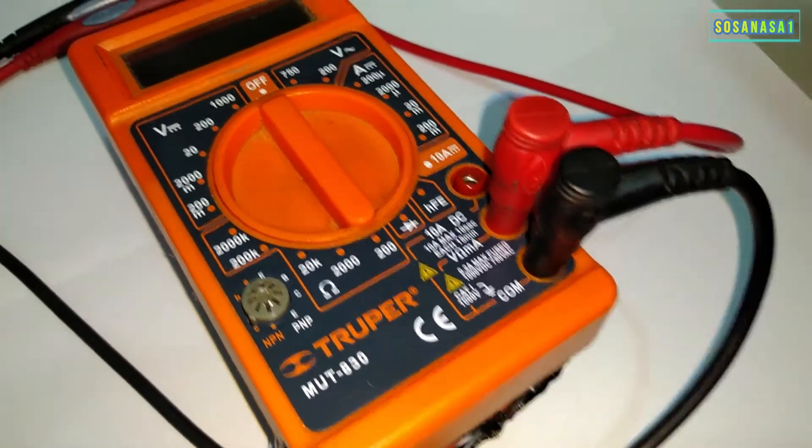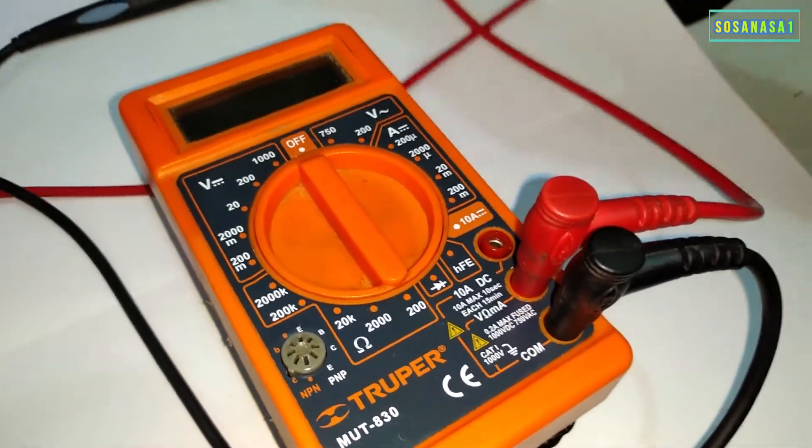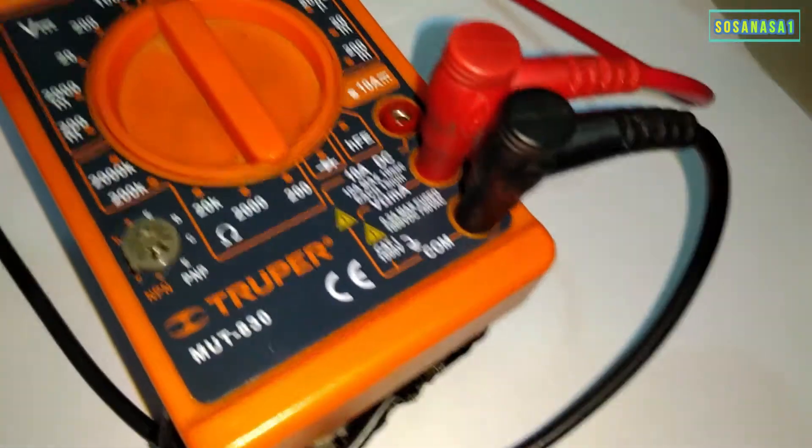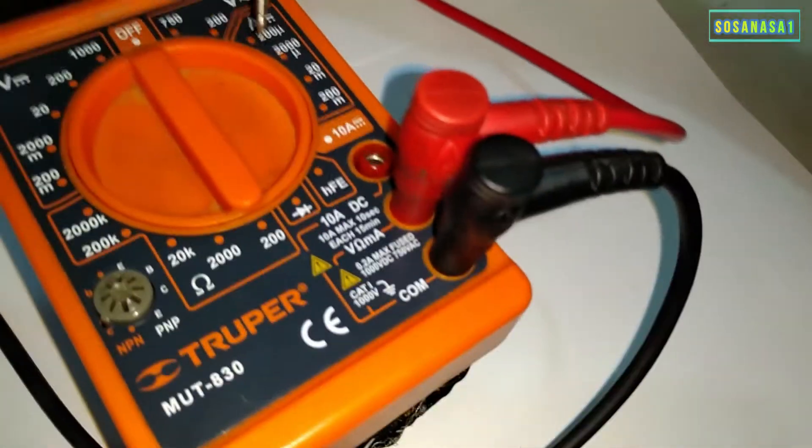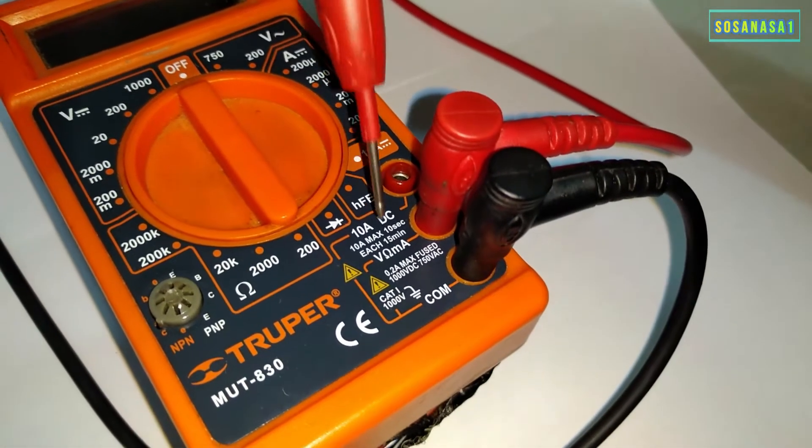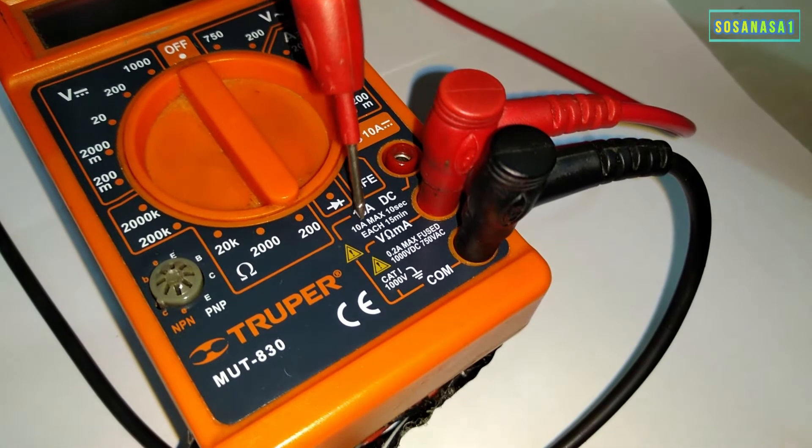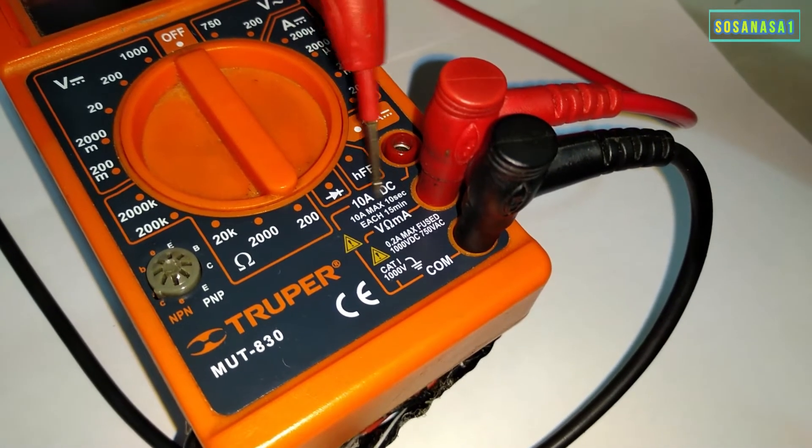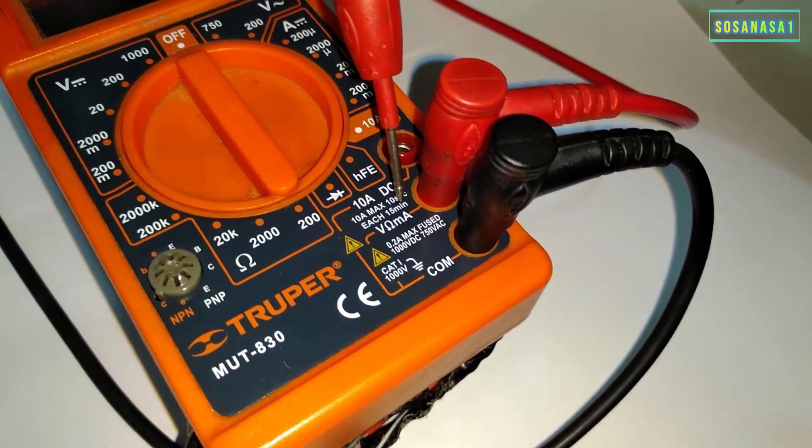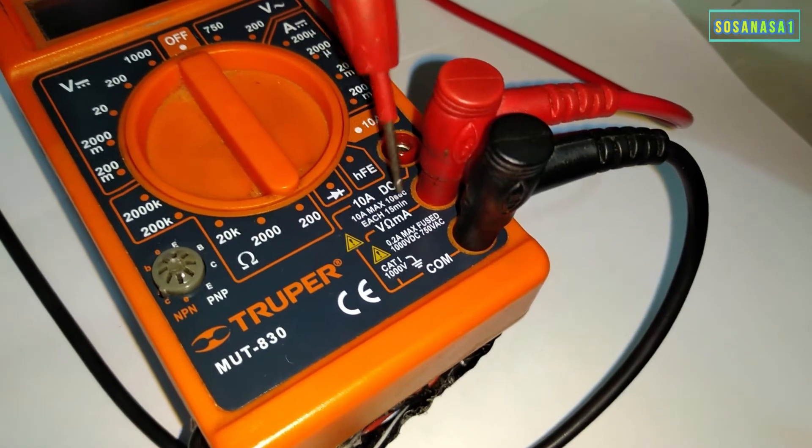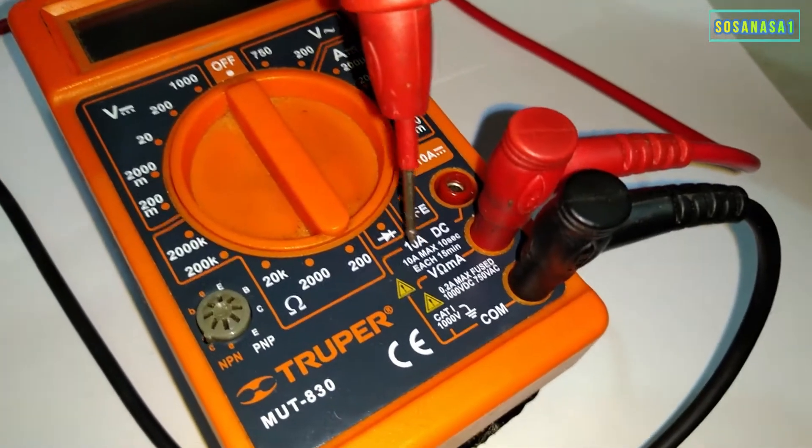If we see this part, it says 10 amperes max, 10 seconds each 15 minutes. It means that if we want to measure a cable that can have 10 amperes, we need to change the connector.